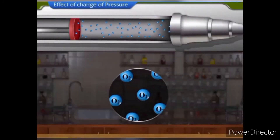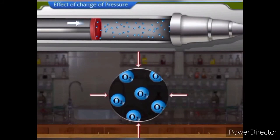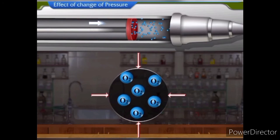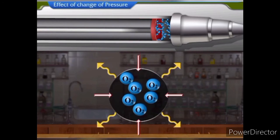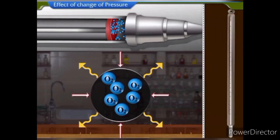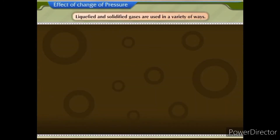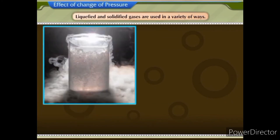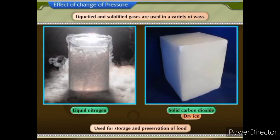In a gaseous substance there is a lot of space between the particles. If pressure is applied, the particles of the gas come closer and the gas is compressed. When a gas is compressed, heat is produced. So while applying pressure, it is necessary to decrease the temperature in order to take away the heat produced during compression. Liquefied and solidified gases are used in a variety of ways. Liquid nitrogen and solid carbon dioxide are used for storage and preservation of food.